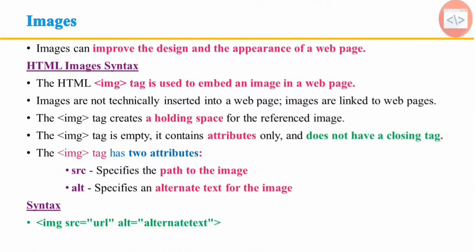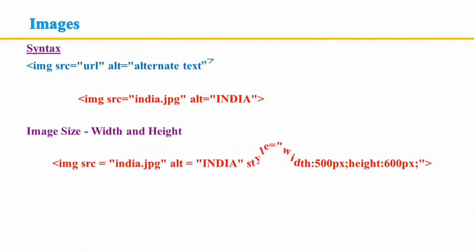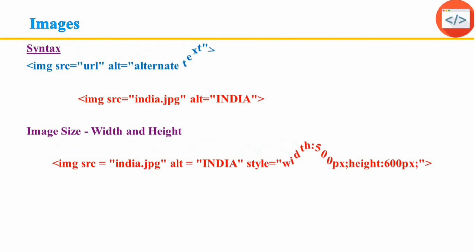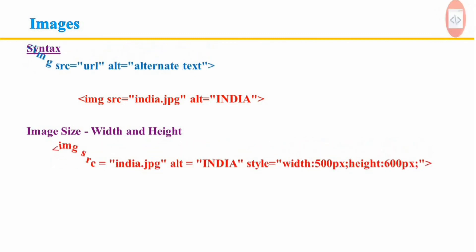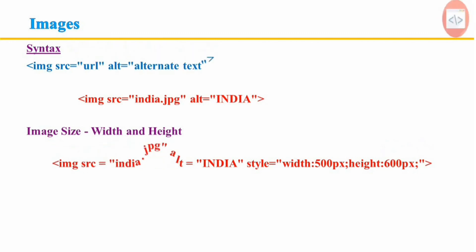HTML images: images are very important to beautify a web page and to depict complex concepts in a simple way. Images can improve the design and appearance of the web page. The image tag is used to add images to a web page. It is an empty tag, meaning it contains only attributes and has no closing tag. The image tag has two main attributes: source and alternate. Source specifies the path of the image. The alternate attribute specifies alternate text for the image if it cannot be displayed. The source attribute identifies an image by URL, which is retrieved by the browser and inserted into the document when the page loads. The alternate attribute provides alternate information if the image cannot be displayed due to a slow connection, error in the source attribute, or if a user uses a screen reader.